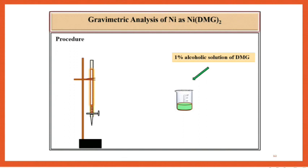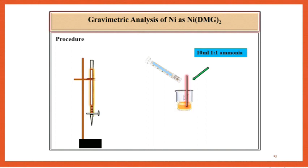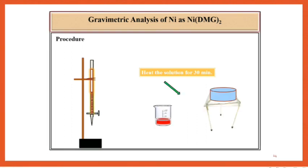To this solution add 1% alcoholic solution of DMG with constant stirring. It will require about 20 ml. Now in the same solution add 10 ml 1:1 ammonia solution with constant stirring. A pinkish red precipitate of nickel DMG is formed. Heat the precipitate on a water bath for about 30 minutes.